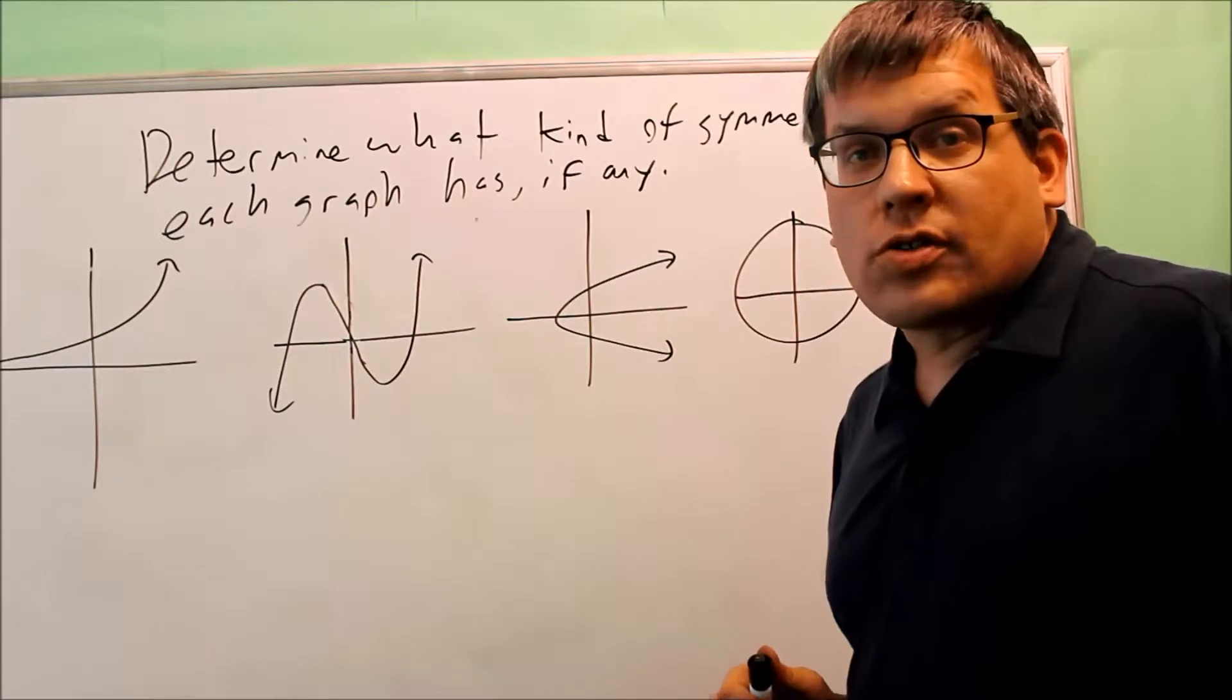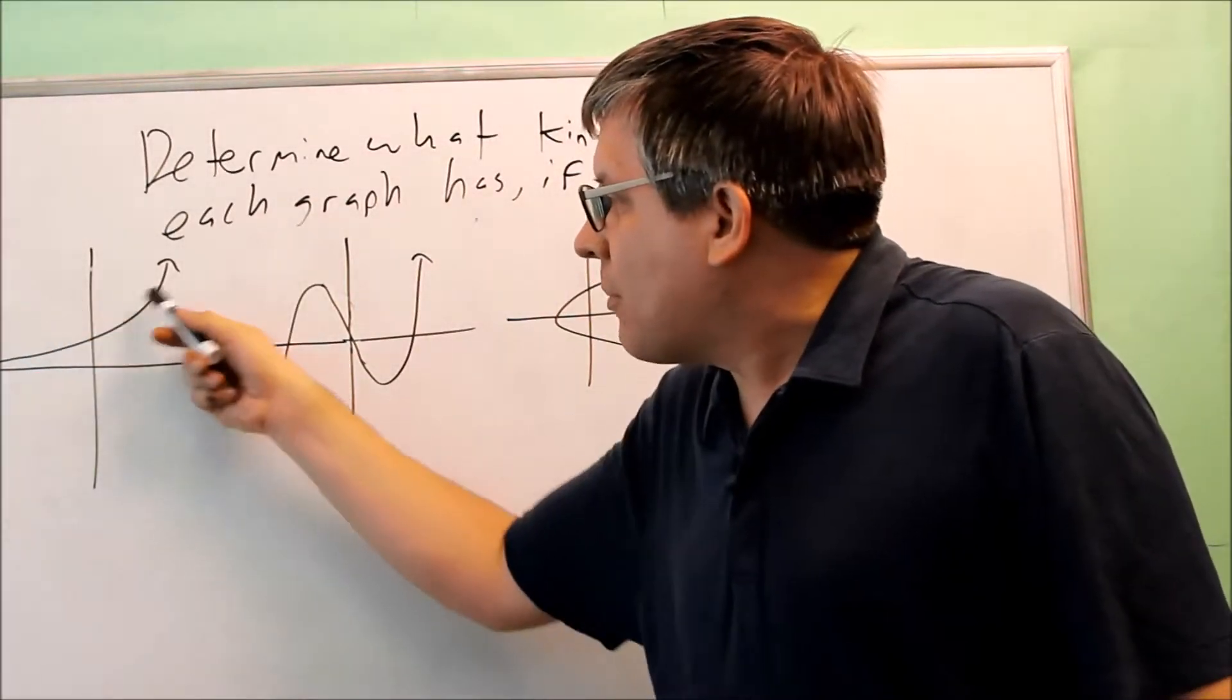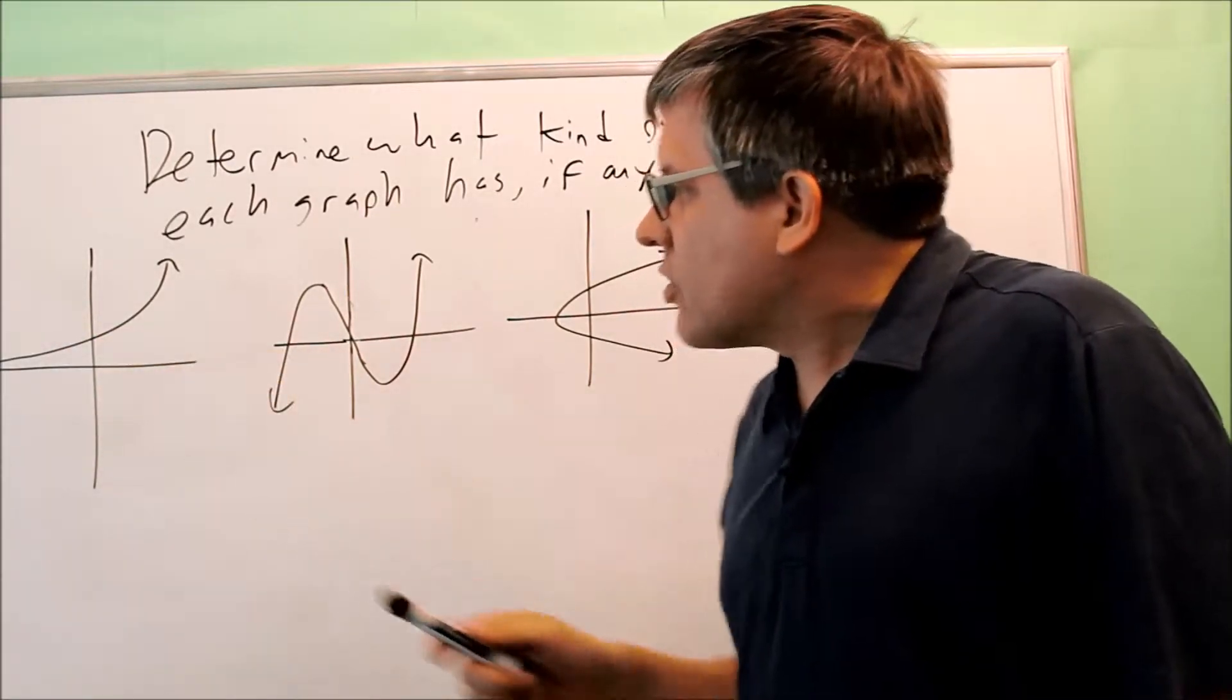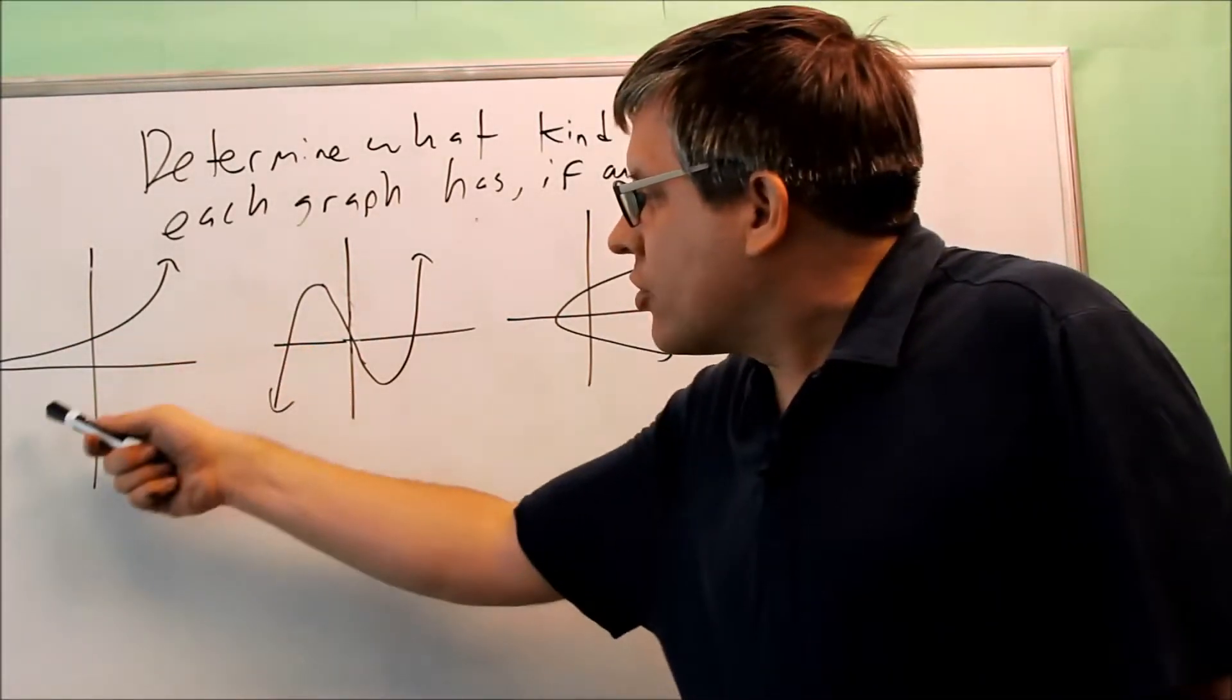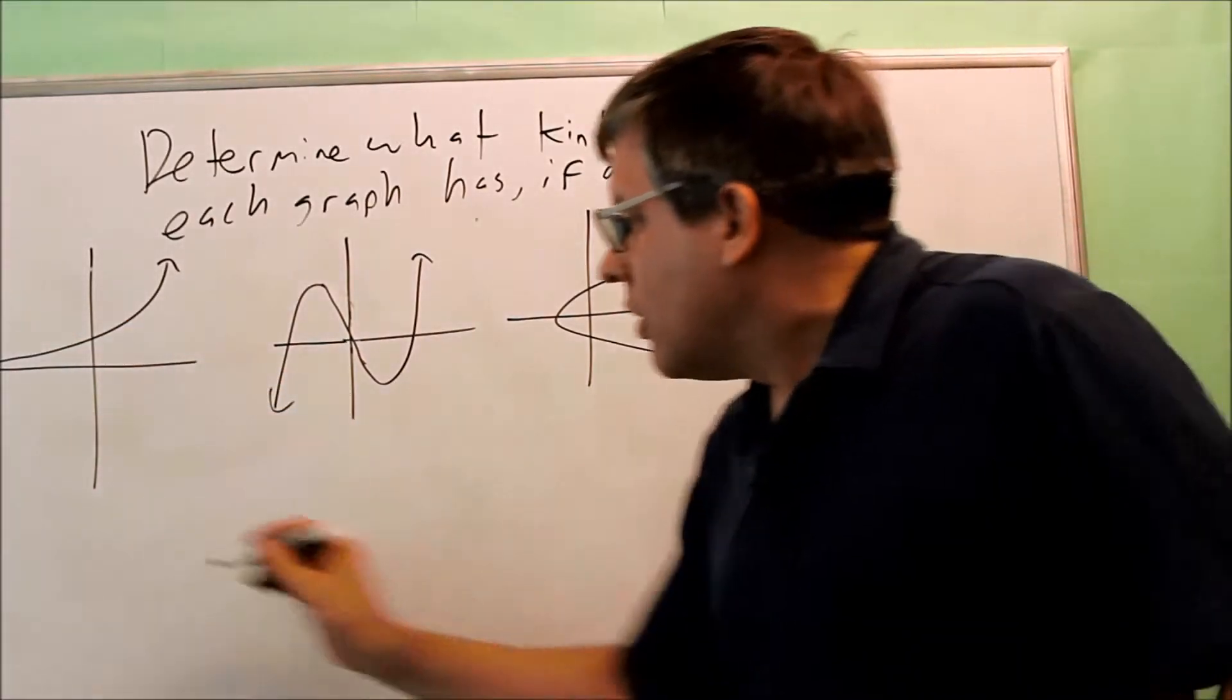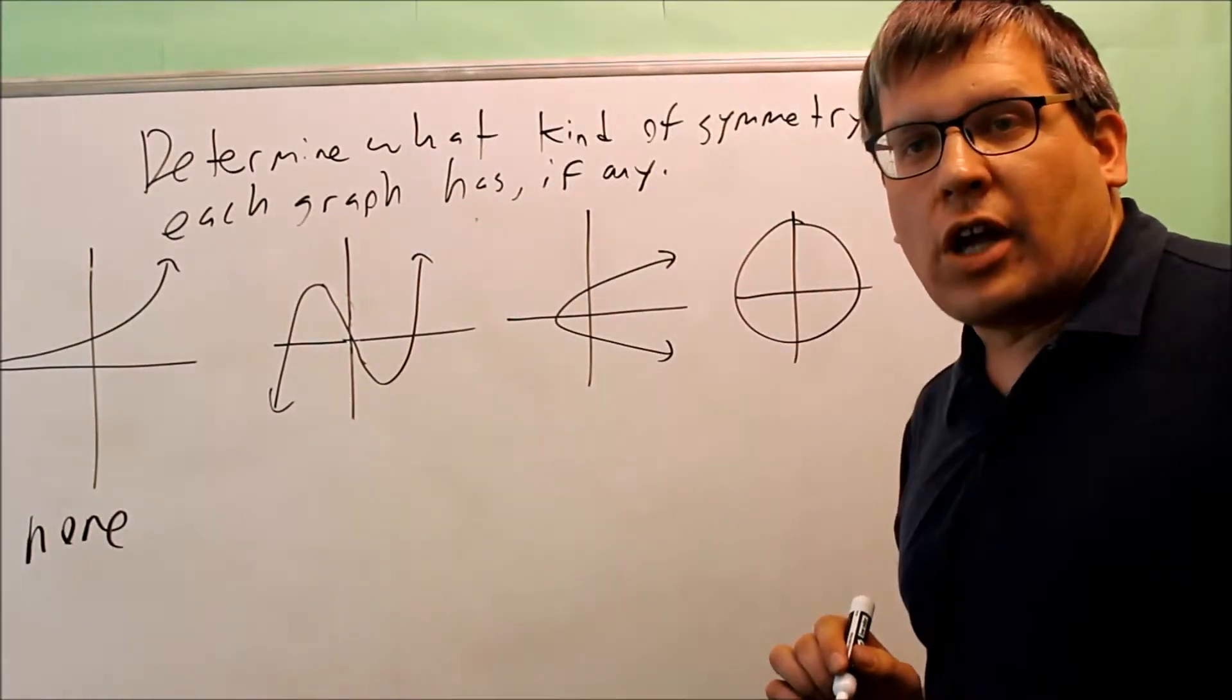The last thing I'm going to look for is origin symmetry. For origin symmetry, I'm looking for if I've got the same thing in opposite quadrants. Now in this case, I don't. So because of that reason, it's not going to have origin symmetry either. I don't have the same thing in opposite quadrants. Therefore, this one has none. There's no type of symmetry that this one has.